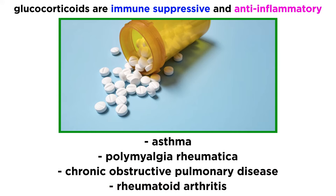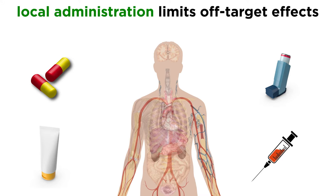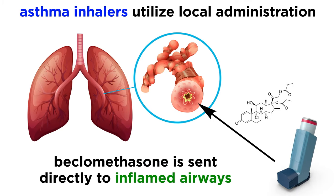It's important to note that there are a large number of other conditions for which glucocorticoids are an approved treatment. Depending on what condition the glucocorticoid is intended to treat, different drugs in this class and different routes of administration are possible. To limit off-target effects, local administration is always preferred if possible, especially for drugs that induce widespread systemic effects like glucocorticoids. A good example is the use of inhalators in the local delivery of beclomethasone, a synthetic glucocorticoid,